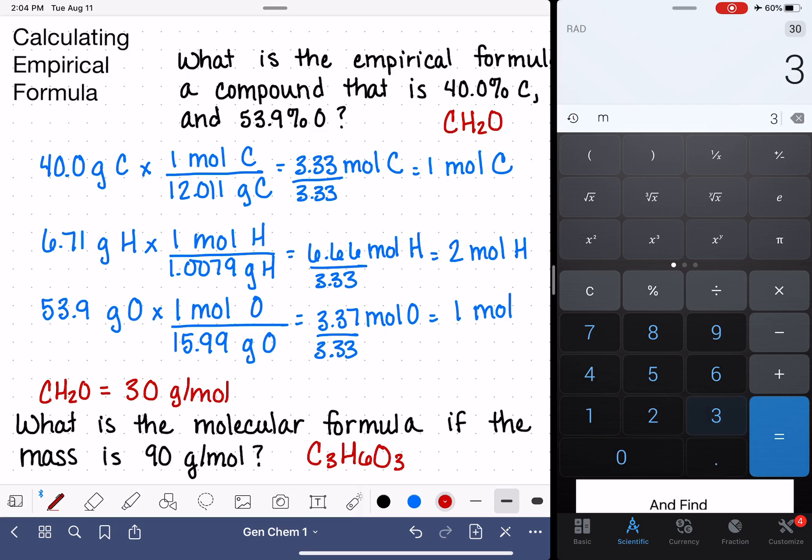If we double check the math on that, 3 times 12 is 36 plus 6 for all of those hydrogens plus 16, 16, and 16 for the three oxygens, 90 grams per mole.